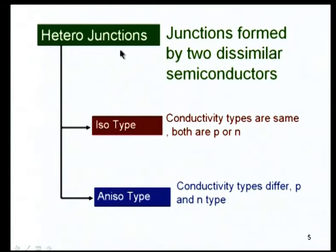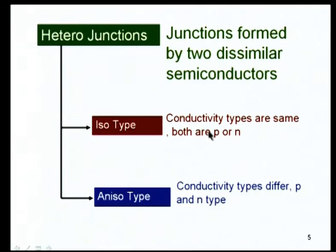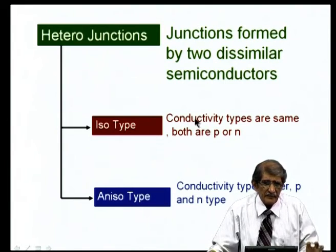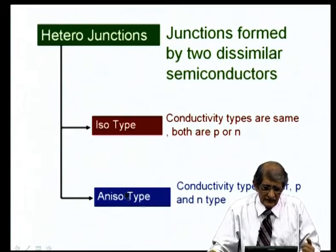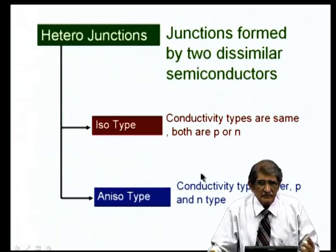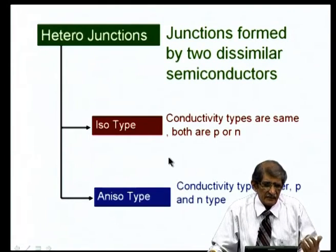Heterojunctions are formed by two dissimilar semiconductors — for example, germanium on silicon, or gallium arsenide on germanium. There are two types: isotype heterojunctions, where both materials have the same conductivity type (e.g., p-type germanium and p-type silicon), and anisotype, where one region is p-type and the other is n-type — for example, p-type gallium arsenide with n-type aluminum gallium arsenide.